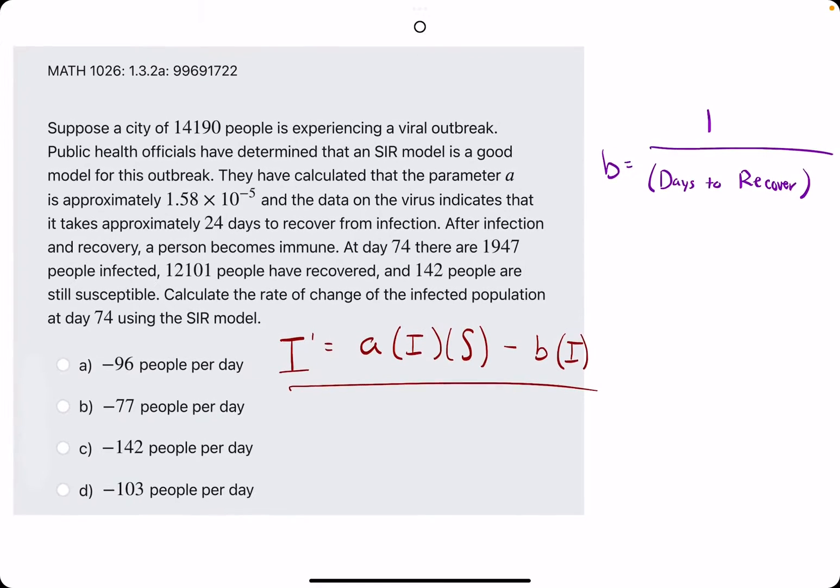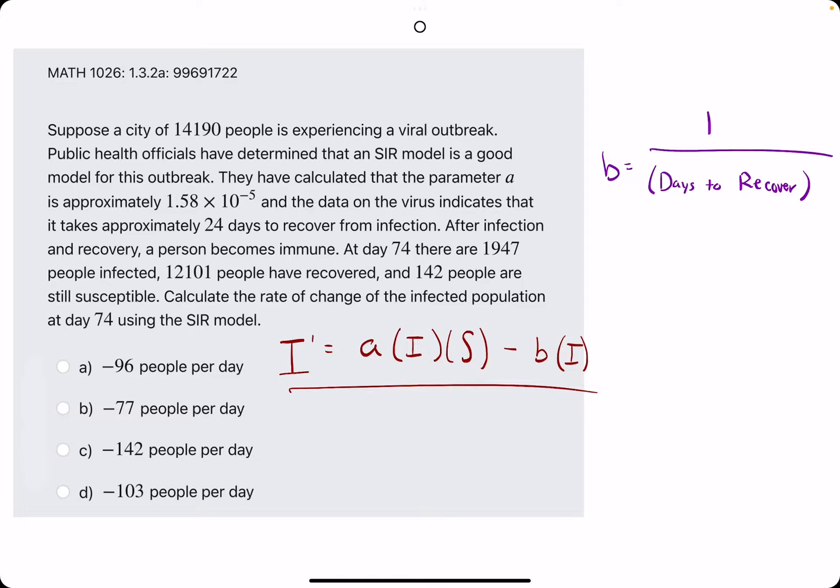In this problem, they give us a bunch of information. Let's just go ahead and read the last statement first. They say calculate the rate of change of the infected population using the SIR model.